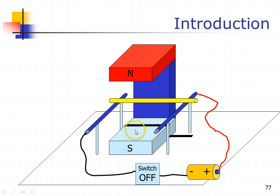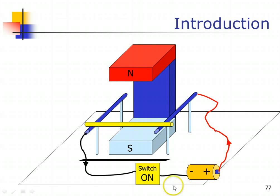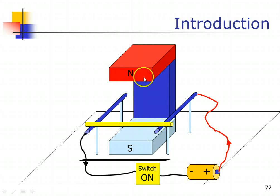Since the permanent magnet is heavier and fixed in place, the one that will actually move due to this force will be the copper rod. For this example, the copper rod rolls away from the magnet in that direction. Now, some of you may have the question: what happens if I reverse the poles of the dry cell or the magnets — so the north is at the bottom and south at the top — in which direction would the force cause the copper rod to move?